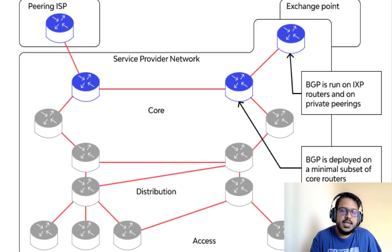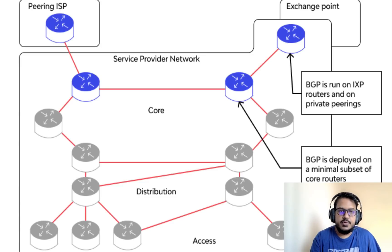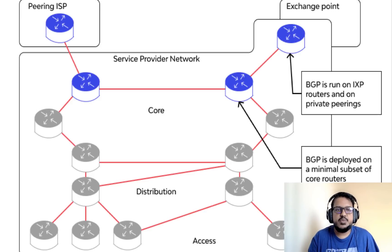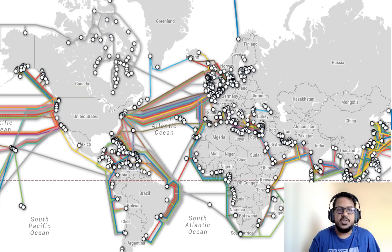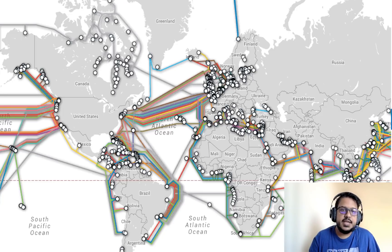Cybersecurity reporter Brian Krebs claims the outage was caused by a routine BGP update. From Facebook's own engineering update, we heard it was caused by configuration changes to backbone routers that coordinate network traffic between their data centers. That led to a cascading effect on the way Facebook's data centers communicate, bringing its services to a halt. According to Facebook, there was no security breach and no server failure — the requests simply could not reach their destination because of the faulty update.